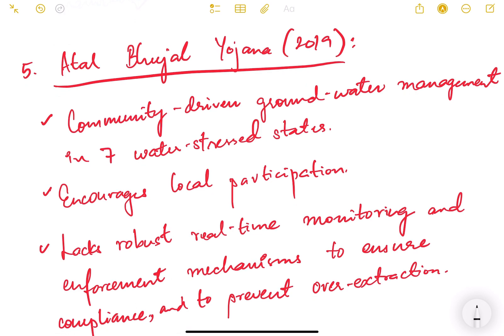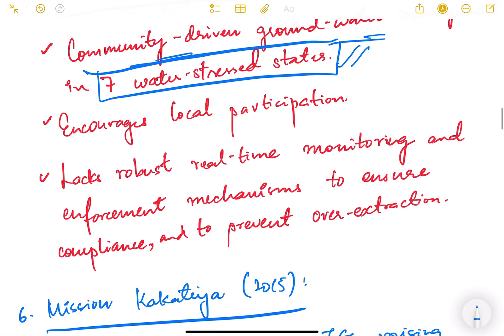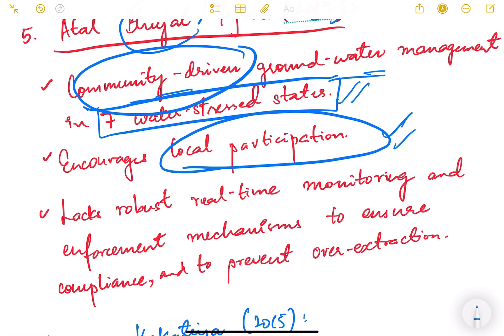Then the next one is the Atal Bhujal Yojana, again of 2019. The name itself suggests that it is related to groundwater. It is a community driven groundwater management program in seven water stressed states. It encourages local participation. Basically it is community driven meaning people will take initiative, and we give them from the government some help, some kind of training and awareness. Local participation is very important in this.